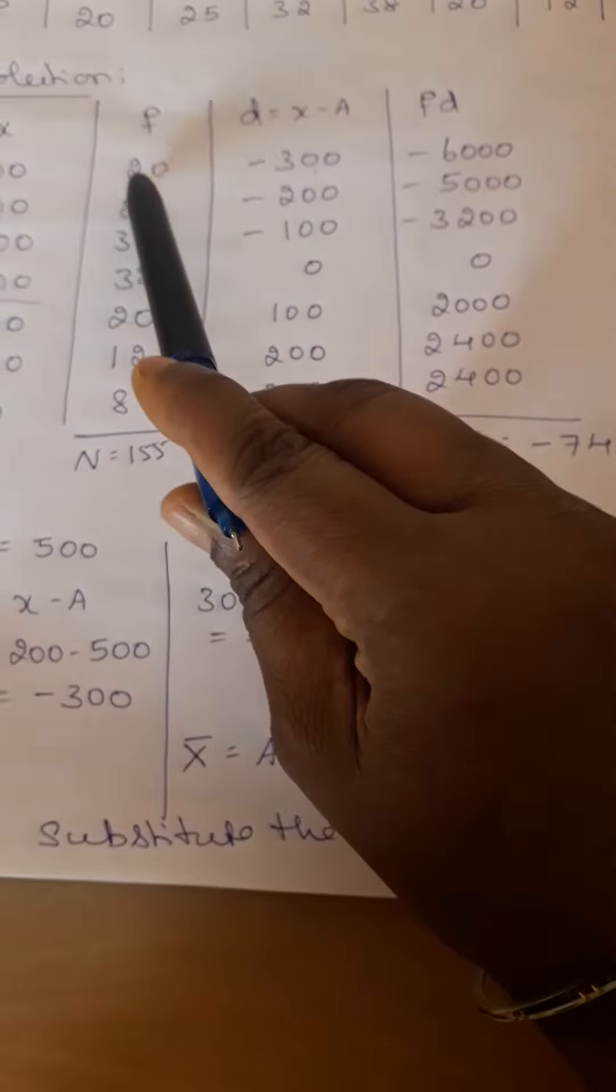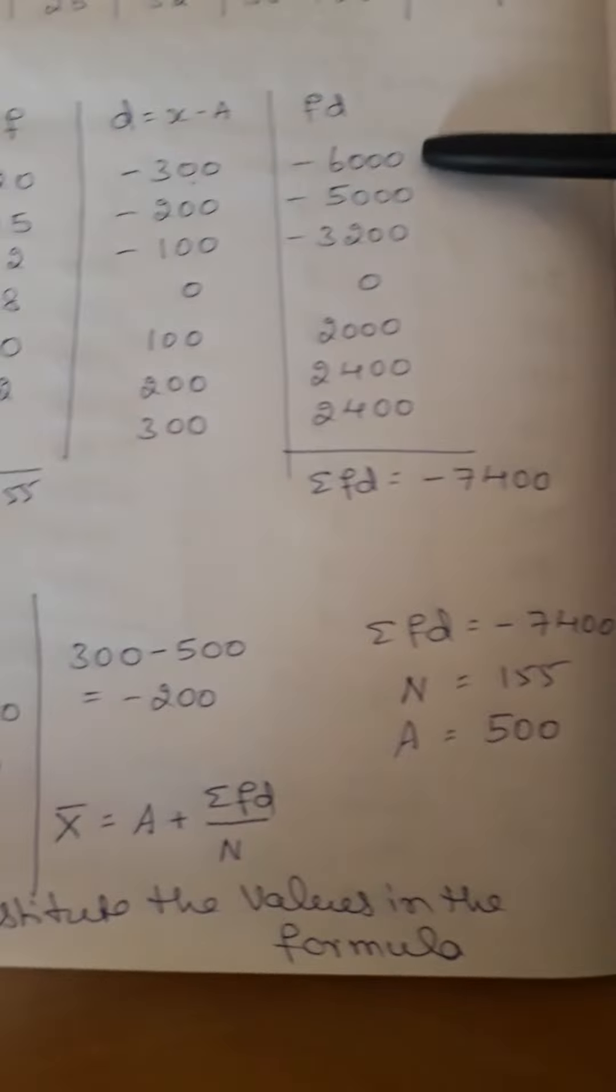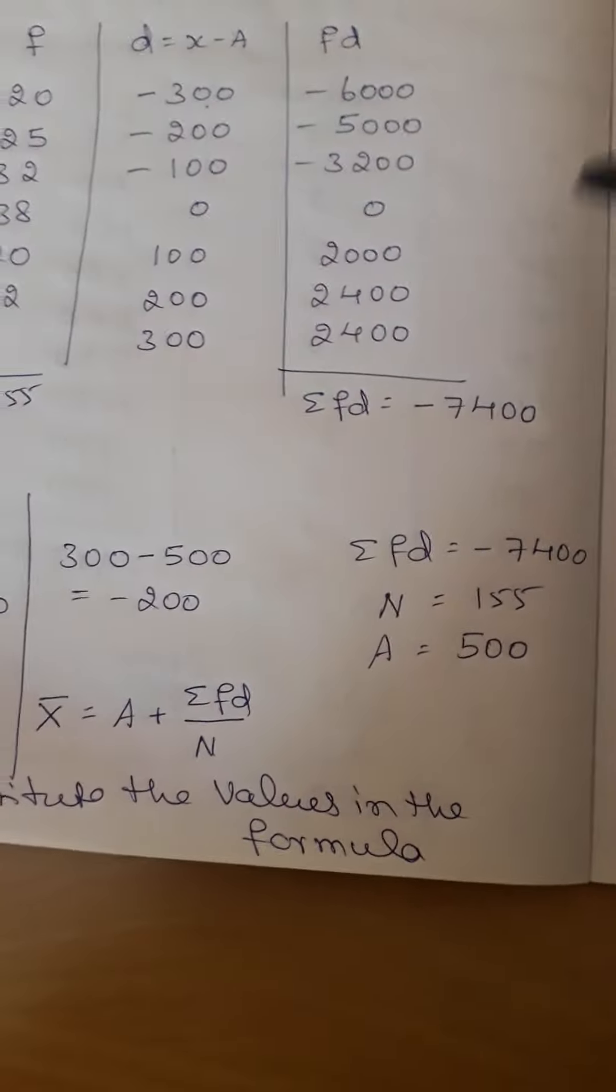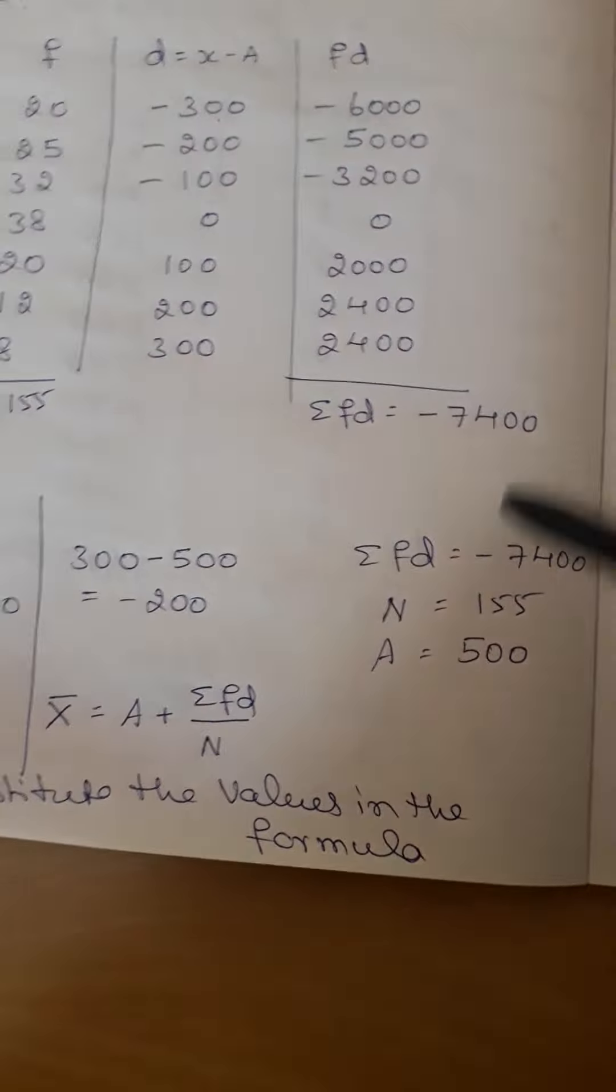Bring all minus values to one side and plus values to another side. You simplify this column so that minus 7400 will be the value. Formula for this arithmetic mean discrete series shortcut method: A plus summation fd by N.